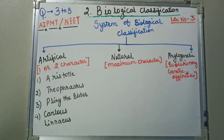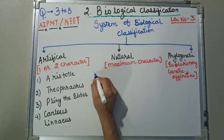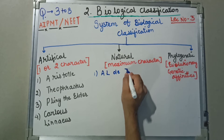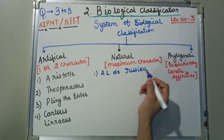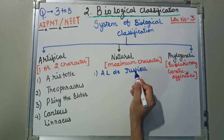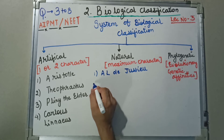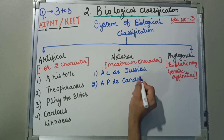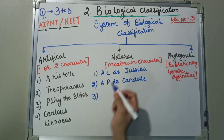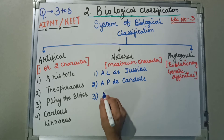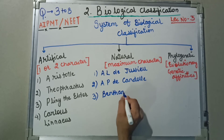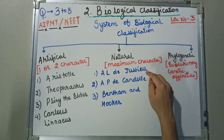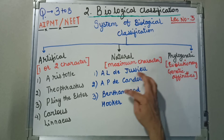In the natural system of classification, the first scientist we are going to read is A.L. de Jussieu. The second name is A.P. de Candolle. The third name in natural system of classification is Bentham and Hooker. So A.L. de Jussieu, A.P. de Candolle, Bentham and Hooker gave us the natural system of classification.